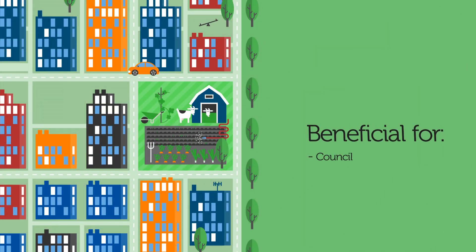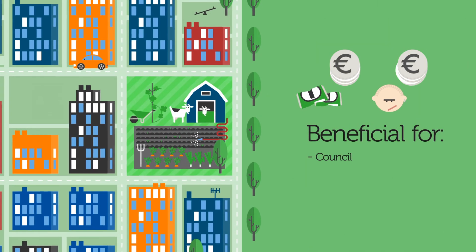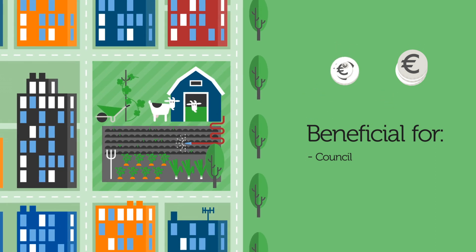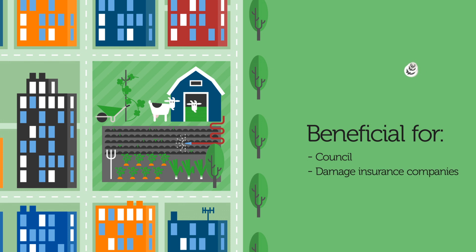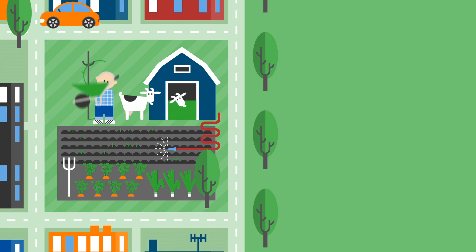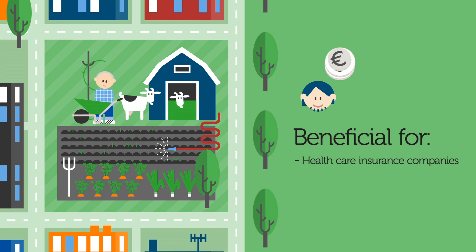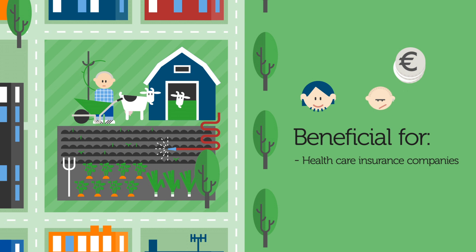The neighborhood is greener. There is less degeneration and crime, so the council spends less on maintenance, and damage insurance companies will have to pay out less. In the urban farm you can employ people who are distanced from the job market. Their psychological health improves due to the fact that they have a daily rhythm. This means lower health care costs — an advantage for the insurance companies — but also less social benefits and less crime, which means that there is less need to police.